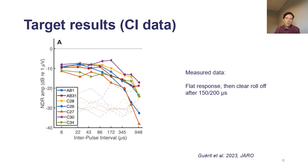Before going into the modeling results, this is what we measured in cochlear implant users with the exact same stimuli. On the x-axis is the inter-pulse interval between the two pulse trains.